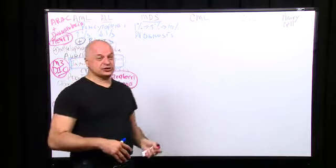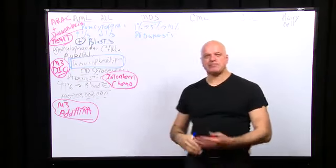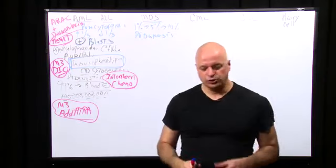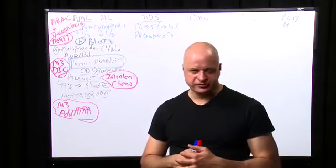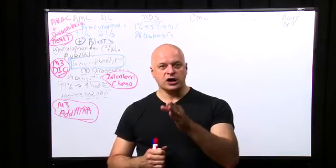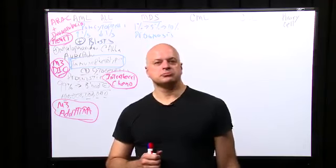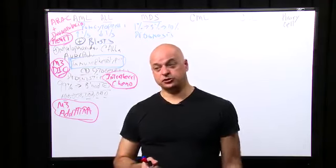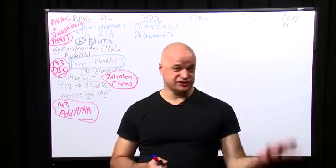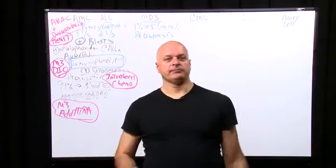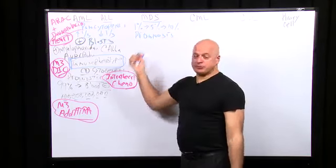Myelodysplasia wants to become leukemia, just as cervical dysplasia wants to become cervical cancer and dysplastic polyps want to become colon cancer. Myelodysplasia is hard to learn because there is no one unique identifying feature. It presents with pancytopenia — lots of things cause pancytopenia: lupus, B12 deficiency, folate deficiency, alcohol, and lots of infections including HIV, CMV, hepatitis B and C.